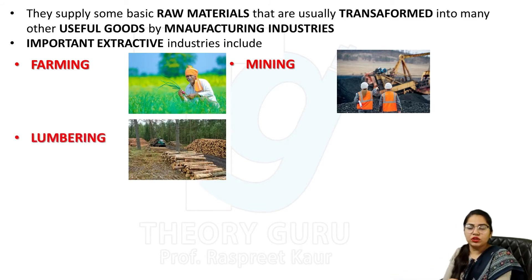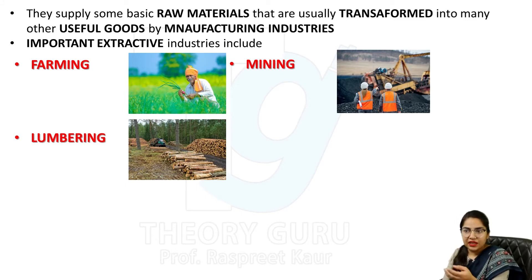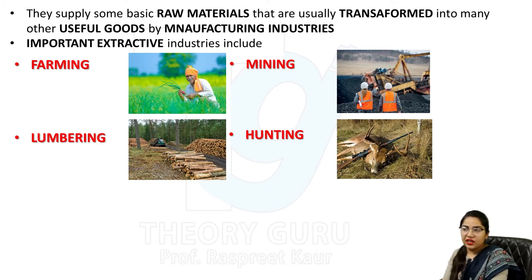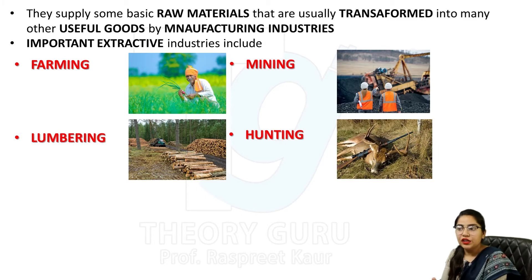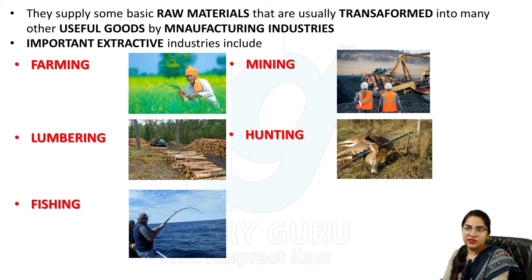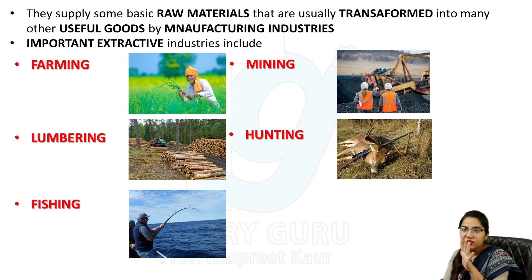Lumbering means cutting trees — timber — which we get from natural resources, from forests. When we go into forests and cut timber, that is called lumbering. Hunting — many things are made from animals, such as clothing from their skin, and deer antlers used as decorative pieces in homes. Fishing is also an important extractive industry. So the five important extractive industries to remember are: farming, mining, lumbering, hunting, and fishing.